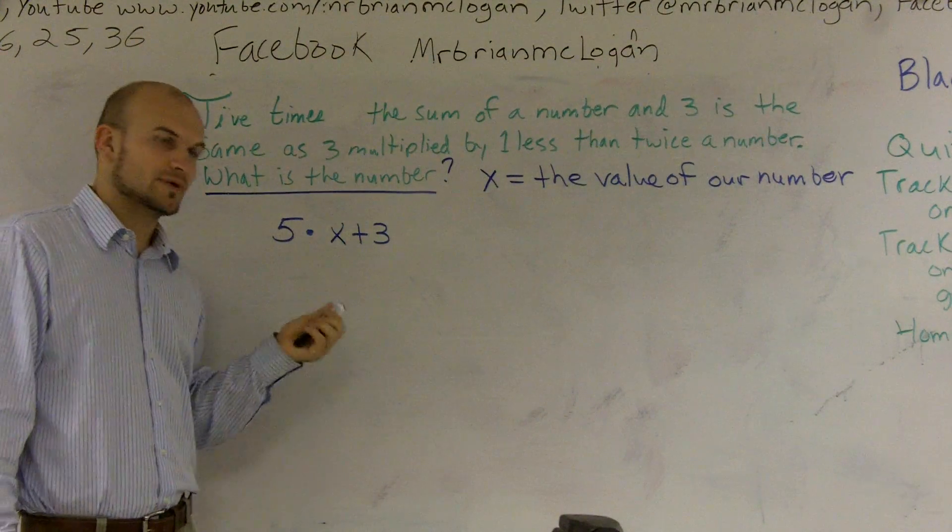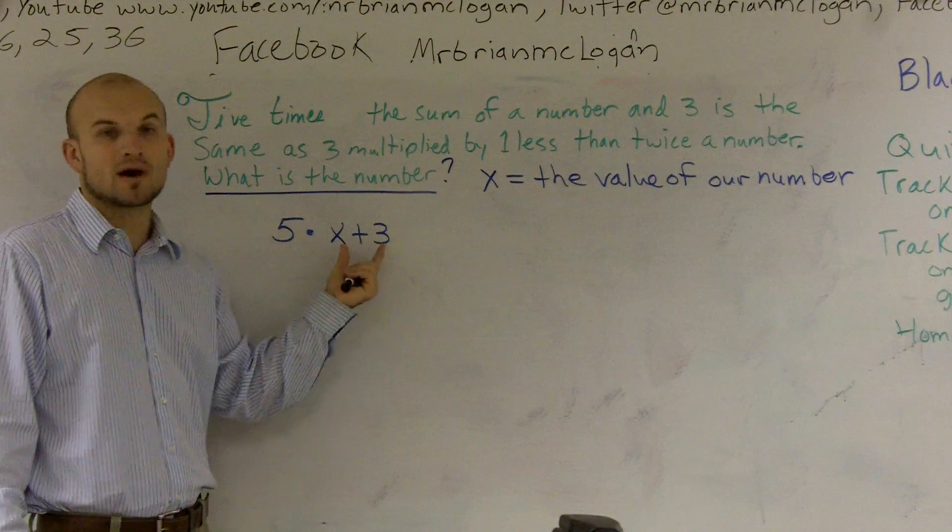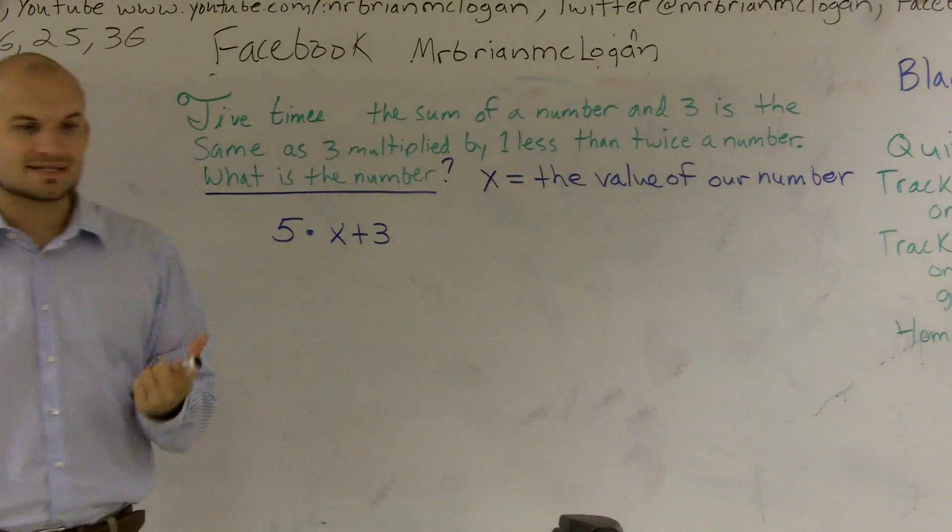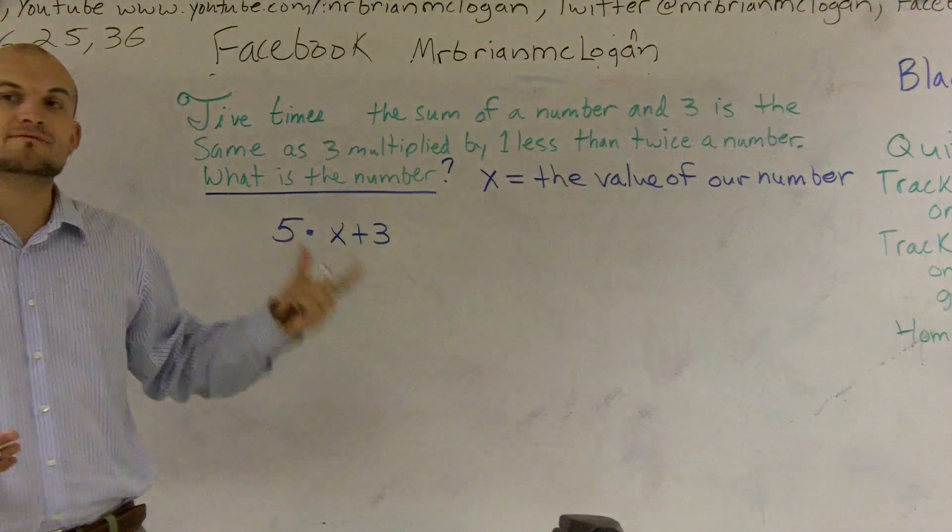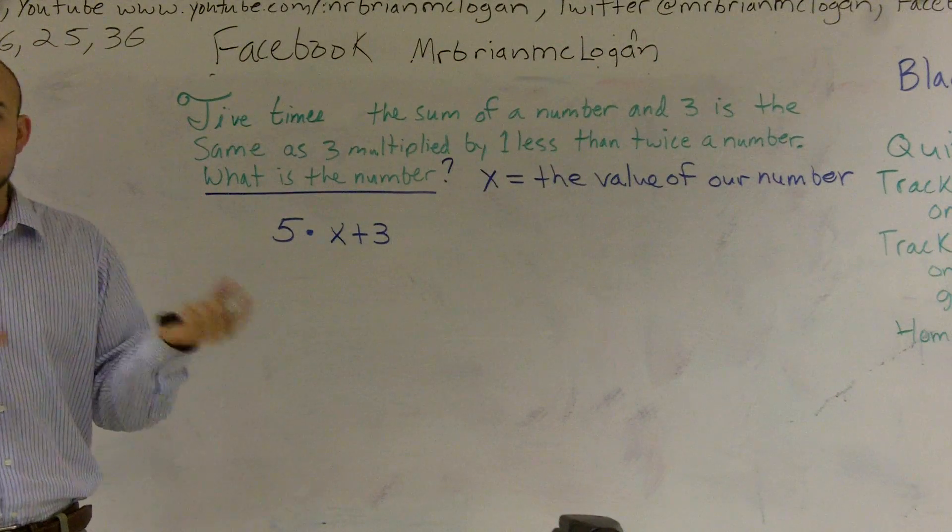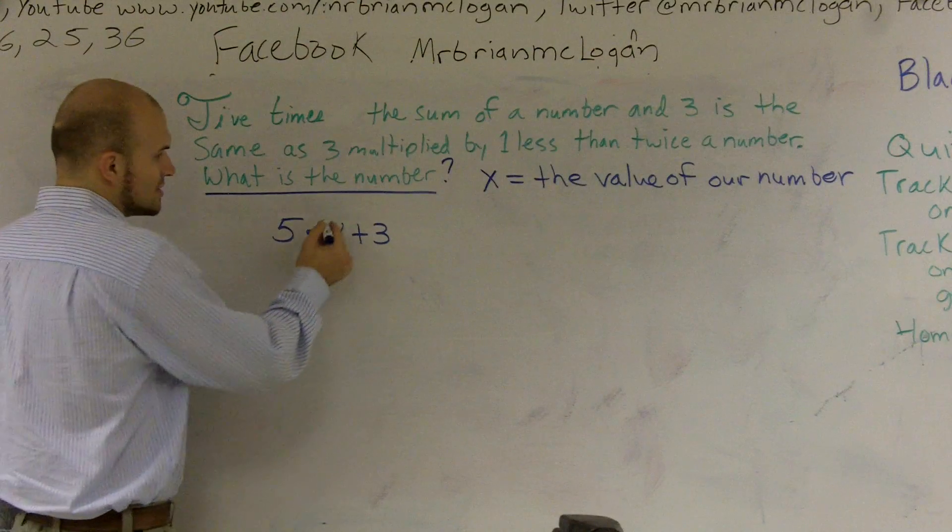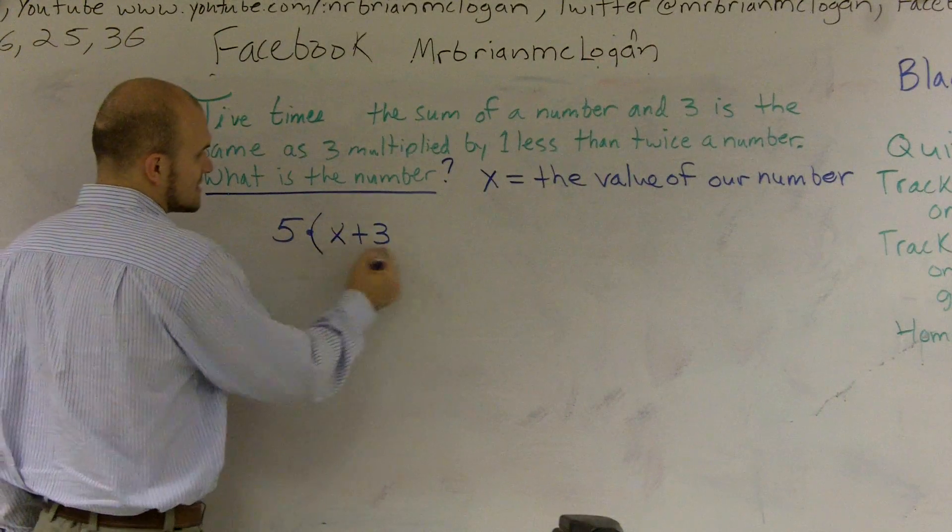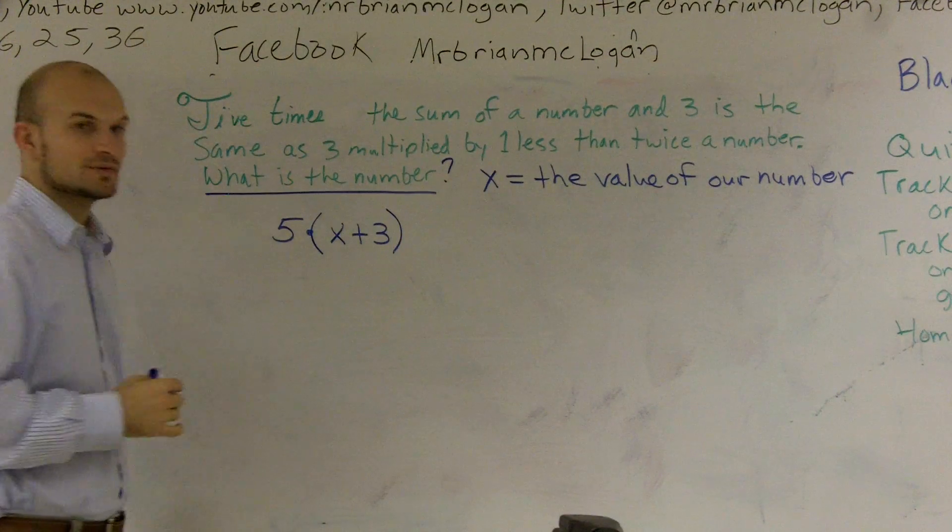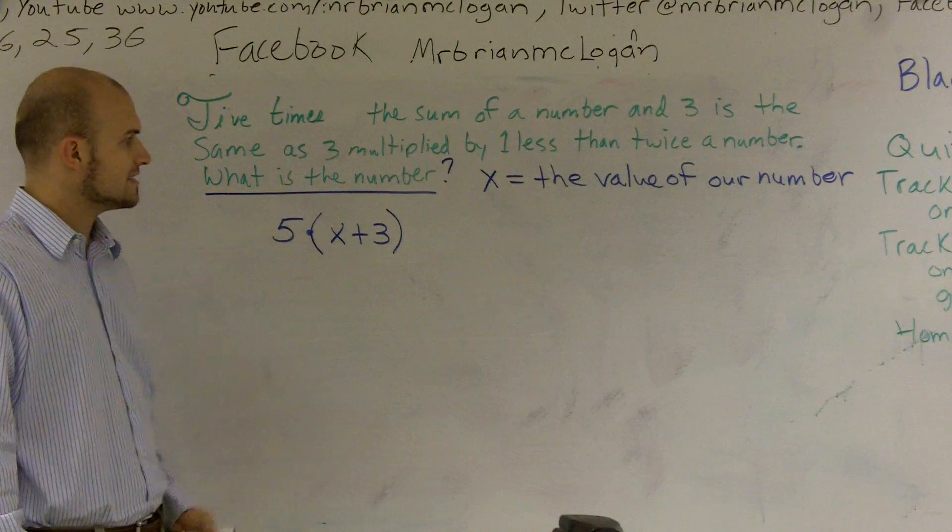So now here comes the distinction that a lot of students make mistakes. If you left it like this, that would mean five times x plus three. Well, when I was to solve this by order of operations, I would have to multiply first before I added it. So it's not saying I want five times my number. It's saying I want five times my number plus three. So they want us to do addition before we do multiplication. You can't do that with order of operations unless you put parentheses around your addition problem. Now I have to compute what's inside the parentheses first, then I'll multiply by five.